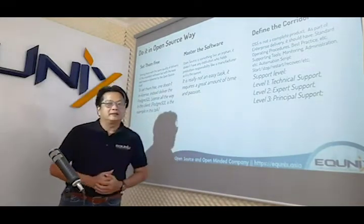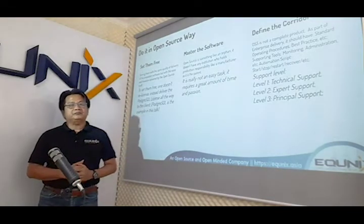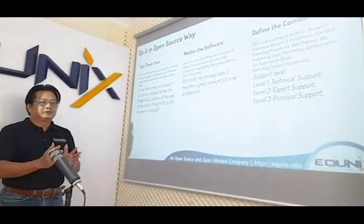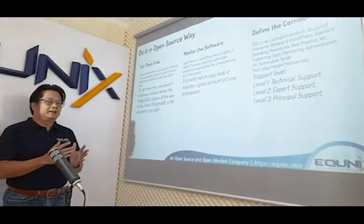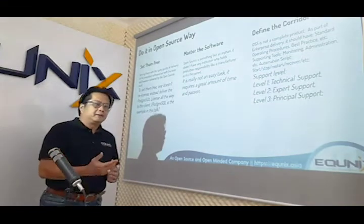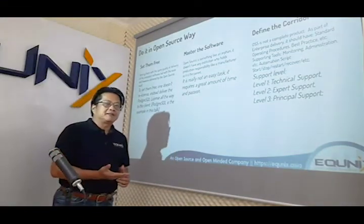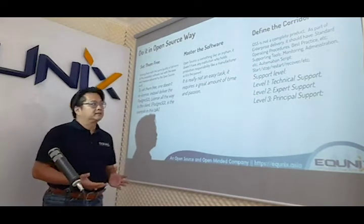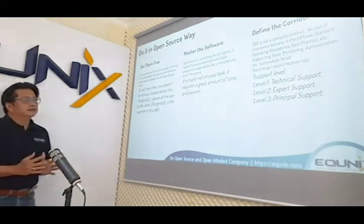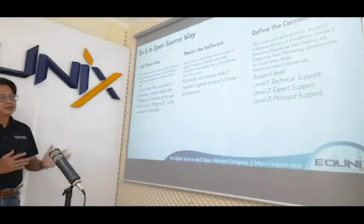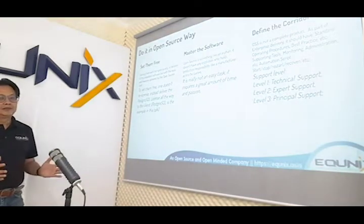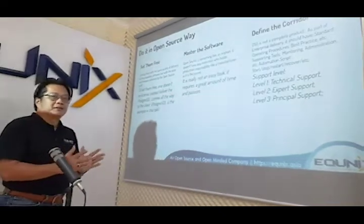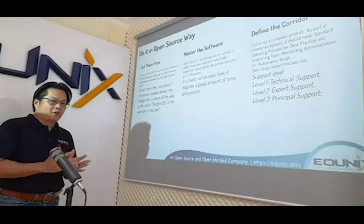The third is to define the corridor. We should define the corridor — something like how to implement, what to do, what not to do, and the procedures, best practices, tuning, and reporting. And also the technical support, expert-level support, and principal support. That's the complete corridor we should deliver to the client, because open-source is actually not a complete product — we should complete it.